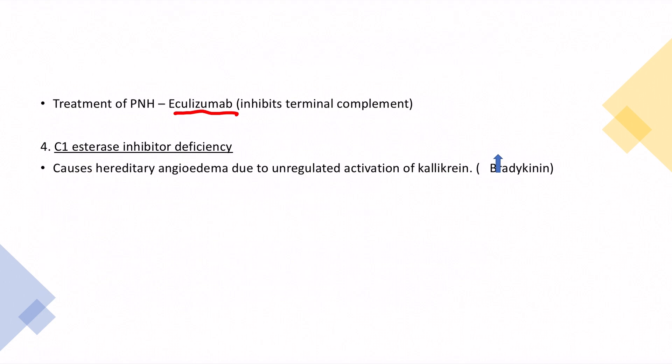The last is the C1 esterase inhibitor deficiency. Here we have hereditary angioedema due to unregulated activation of kallikrein. Kallikrein leads to increased bradykinin and that leads to the angioedema.